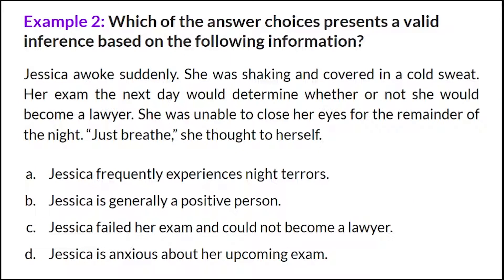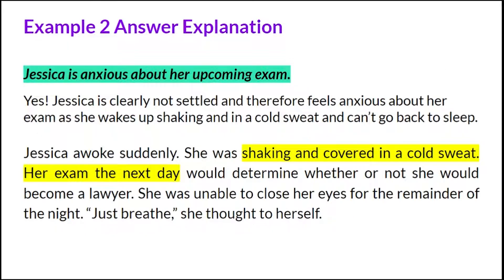Here's example two. This question presents you with a scenario, so you'll need to read the scenario, then the statements, and read the answer choices carefully — which answer choice presents the best inference? D is the best answer: 'Jessica is anxious about her upcoming exam.' Jessica is clearly not settled and feels anxious about her exam, as she wakes up shaking and in a cold sweat and can't go back to sleep. I've highlighted that piece in yellow from the scenario.